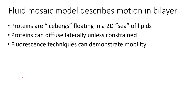Let's first start by discussing the fluid mosaic model. The fluid mosaic model describes the motion that we see in a lipid bilayer. You can imagine it as though the lipid bilayer is a sea of lipids, and there are proteins almost floating in it like icebergs. These proteins are able to diffuse laterally, freely, from side to side, as we've discussed earlier when we were talking about movement in lipid bilayers.